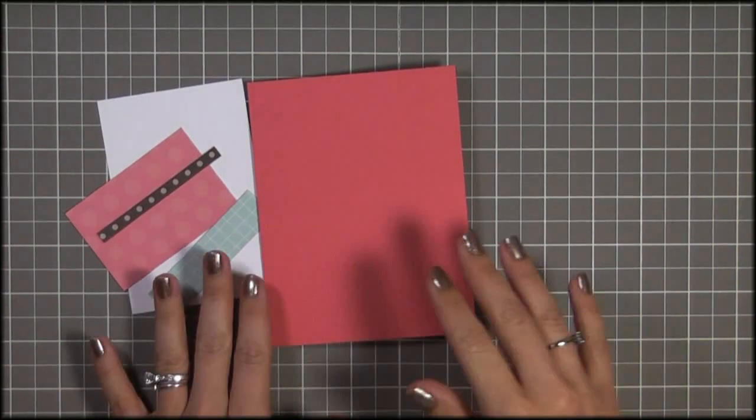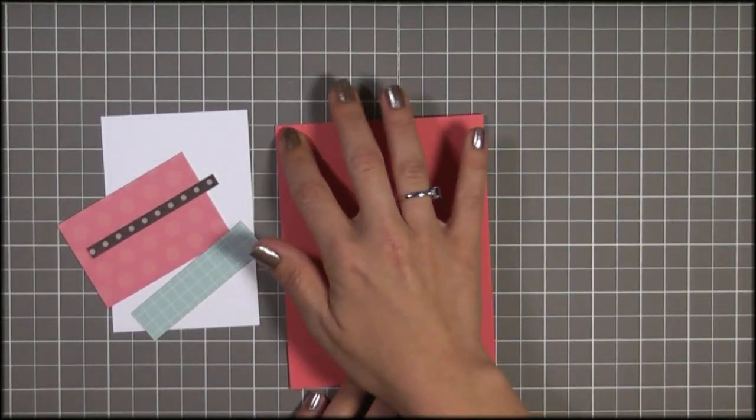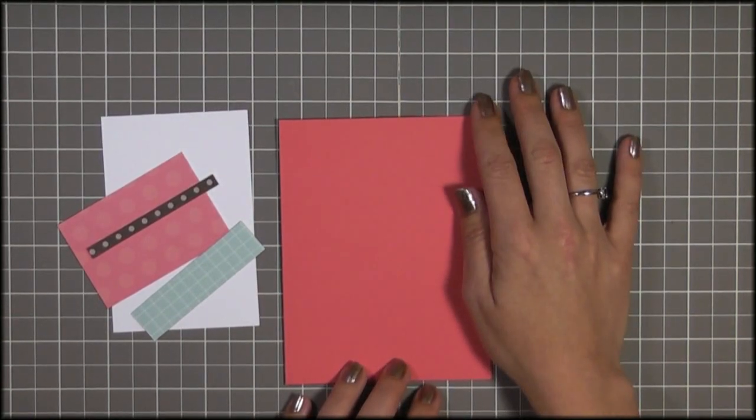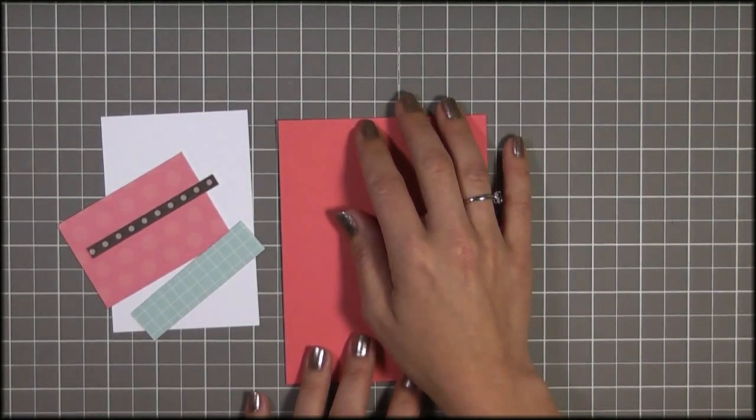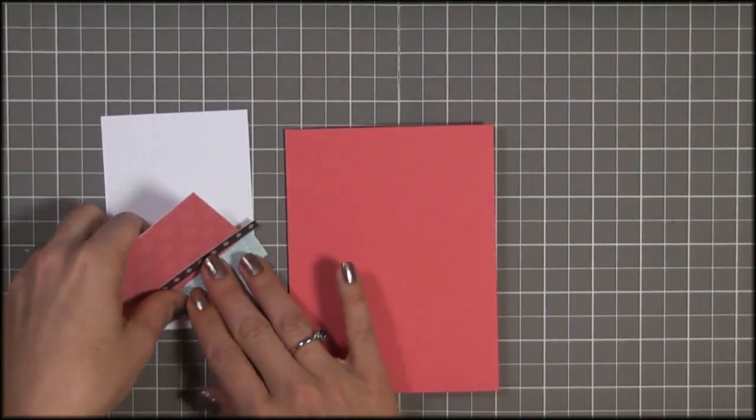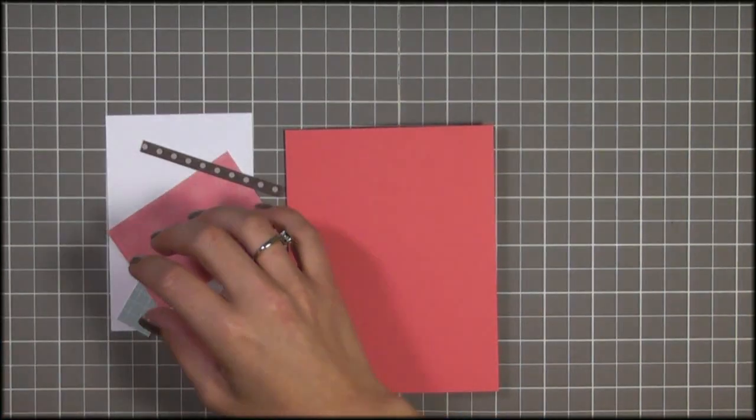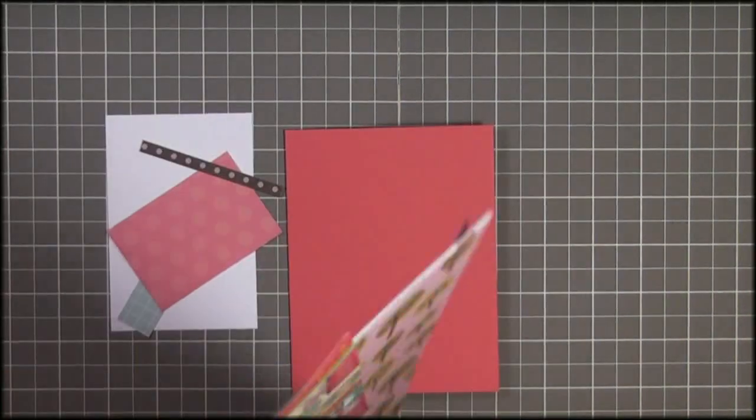So for today's card, we're going to be using the ice cream cone, starting out with a berry sorbet card base by Paper Trey Inc. It's a standard size, 4 1⁄4 by 5 1⁄2 tall. And I'm pairing it up with a couple of patterned papers from I think My Little Shoe Box collection, or My Little Shoe Box.